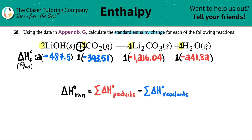Now you add the reactants together and add the products together — get one reactant number and one product number. For the reactant side: 2 times negative 487.5, plus negative 393.51. My total for the reactant side is negative 1,368.51.